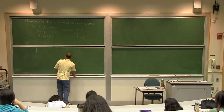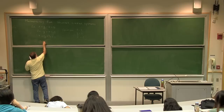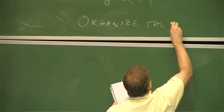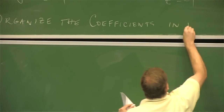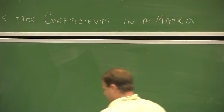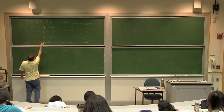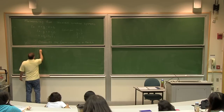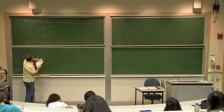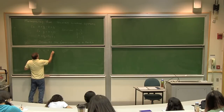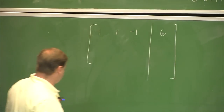To work with this, I'm going to extract all the coefficients — it's like I take the system and distill it, and what I'm left with are just the coefficients. That's really where all the information is. Let's put a label to this: we're going to organize the coefficients in a matrix.